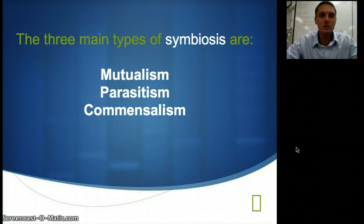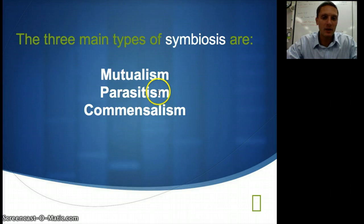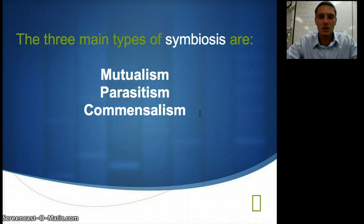There are three main types of symbiosis that we're going to talk about. The first one is called mutualism, you've probably heard of that before. The second is called parasitism, and the last one is called commensalism. We're going to look at these three more specifically.